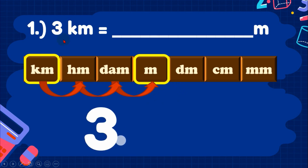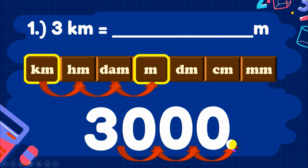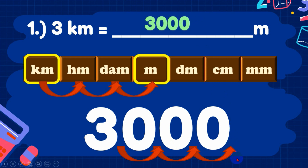If we have 3, remember that a whole number always has a decimal point right after it — so the decimal is after the 3. Moving the decimal point 3 places to the right and filling the blank spaces with zeros gives us 3,000. Since the decimal ends up at the far right, we don't need to write it. Therefore, 3 kilometers equals 3,000 meters.